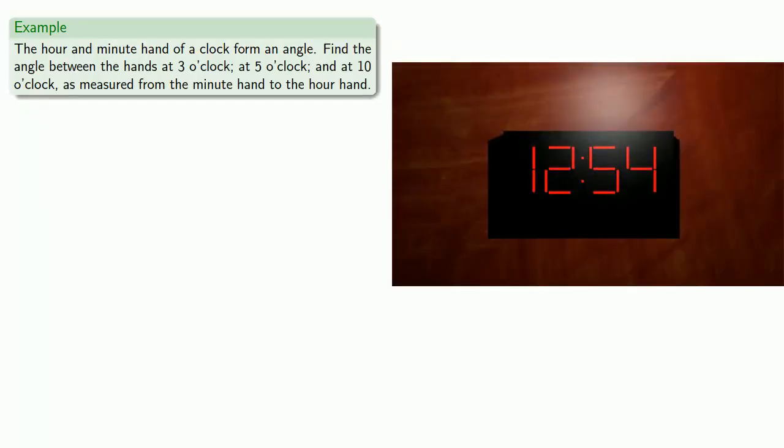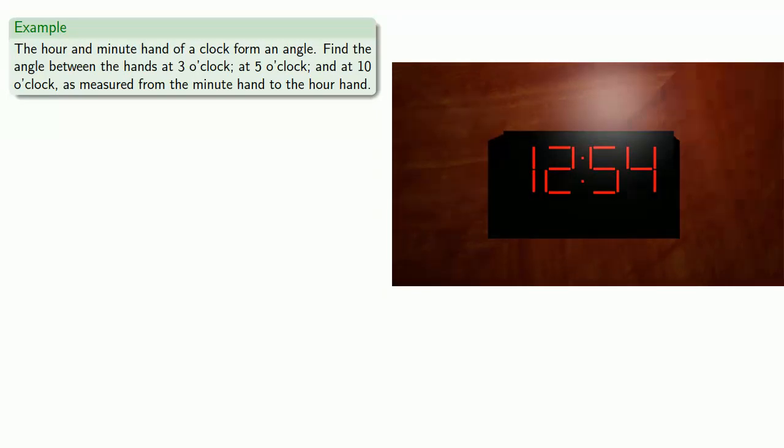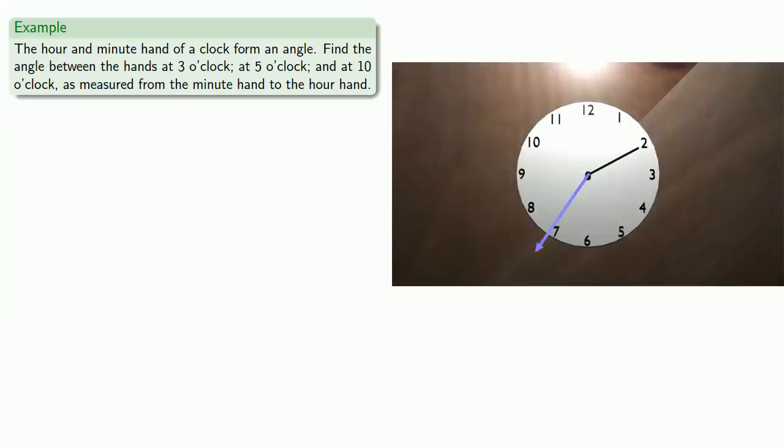Probably the most common appearance of angles in everyday life is on the hands of a clock. Not that type of clock. A more traditional, old-timey clock. The hour and minute hand of a clock form an angle. So let's try to find the angle between the hands at three o'clock, at five o'clock, and at ten o'clock, as measured from the minute hand, that's the longer of the two hands, to the hour hand, that's the shorter.